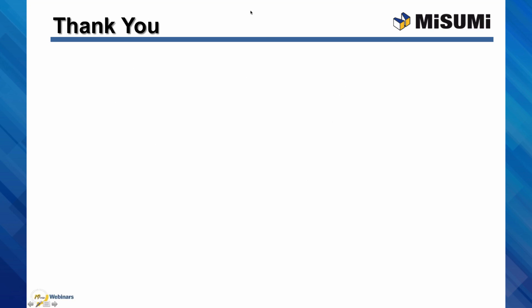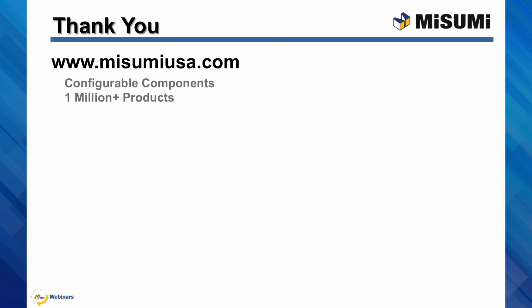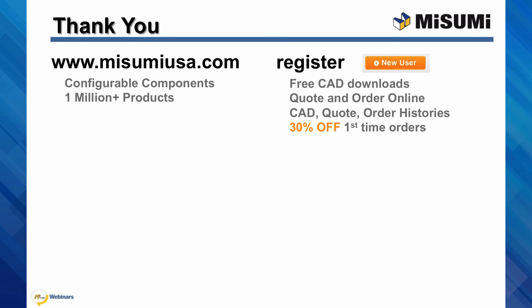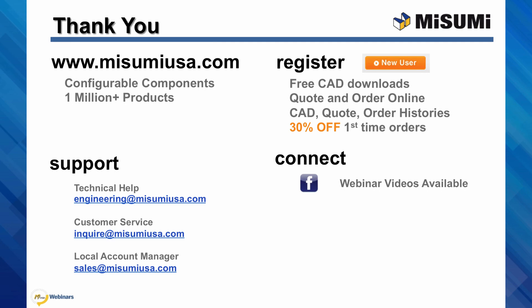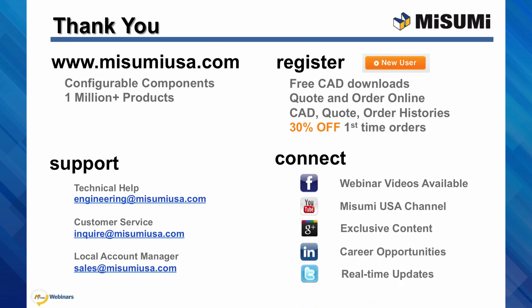Thank you and we hope you enjoyed today's webinar. All of Misumi's configurable components and 1 million products are available at www.misumiusa.com. If you are new to Misumi, register for access to CAD downloads, online formal quotes and orders, and manage all of your account histories. For first-time companies purchasing, you can receive 30% off. Full support is also available: technical help at engineering@misumiusa.com, customer service at inquire, and your local account manager at sales. Facebook now has our 19-minute video series available to view at your leisure. Connect with us to join the conversation and see exclusive content. Thank you again.